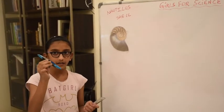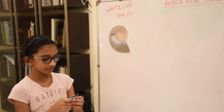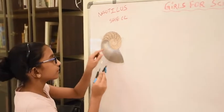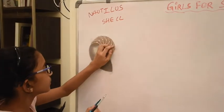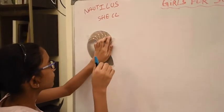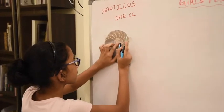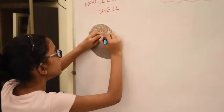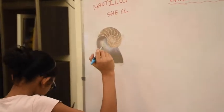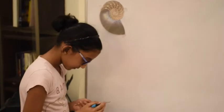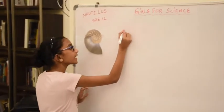Now, let's take the divider and measure from the middle part of the shell to the edge of each chamber. Let's put it from the middle to this point of the chamber. Now, let's take our ruler and measure it. It is 3.07.